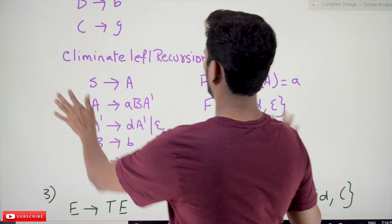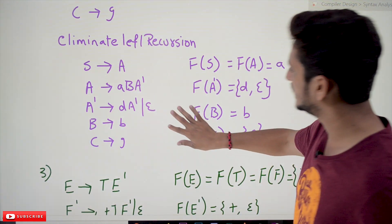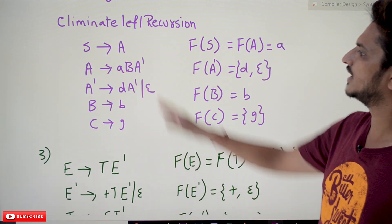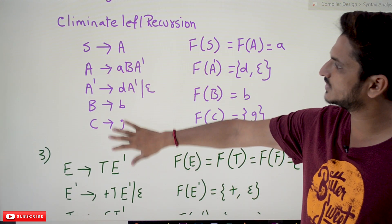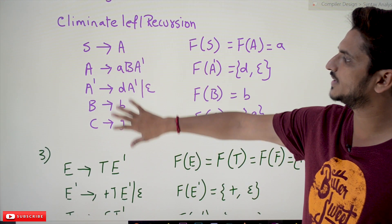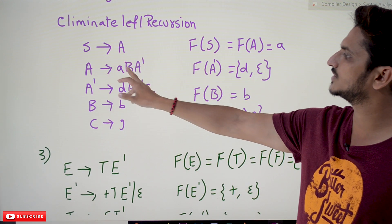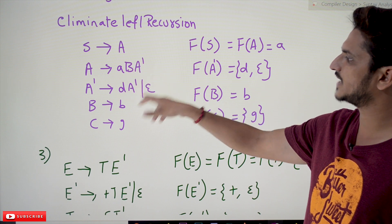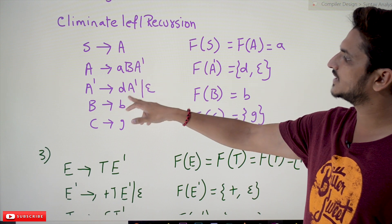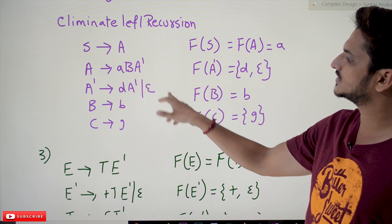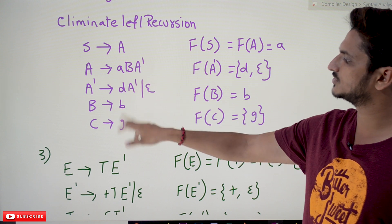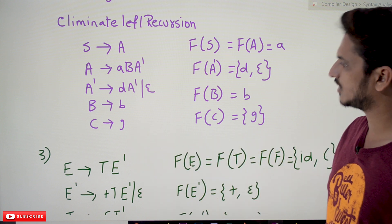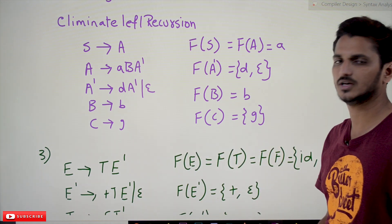So we are not going to discuss it again. After eliminating the left recursion, the grammar becomes: S tends to A, A tends to a A' or a, A' tends to D A' or epsilon, B tends to B, C tends to G.